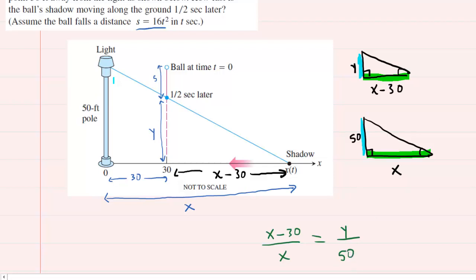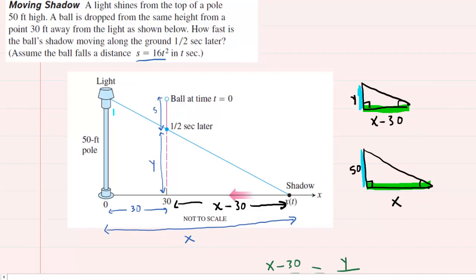We want to go back and keep in mind what we're trying to solve for. The question wants how fast the ball's shadow is moving. So the ball's shadow, which is located right here, is moving a distance x as the ball itself falls. So the question is really asking us for dx/dt. That would be the rate at which this distance x is changing as the ball falls and the shadow moves inward.